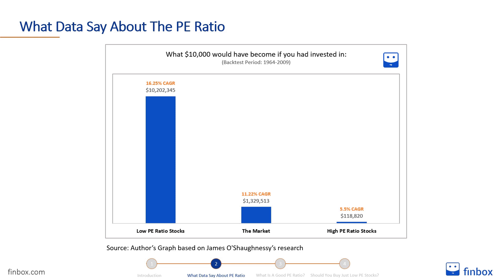By investing in the group of stocks with the lowest P/E ratio between January 1st, 1964 and December 31st, 2009, you would have obtained a 16.25% CAGR against the 11.22% of the market. Investing $10,000 back then would have become slightly over $10 million, while the same amount would have been just about $1,329,513 by investing in the whole market. Meanwhile, $10,000 would have been no more than $118,820 if you had invested it in the high P/E ratio stocks group.